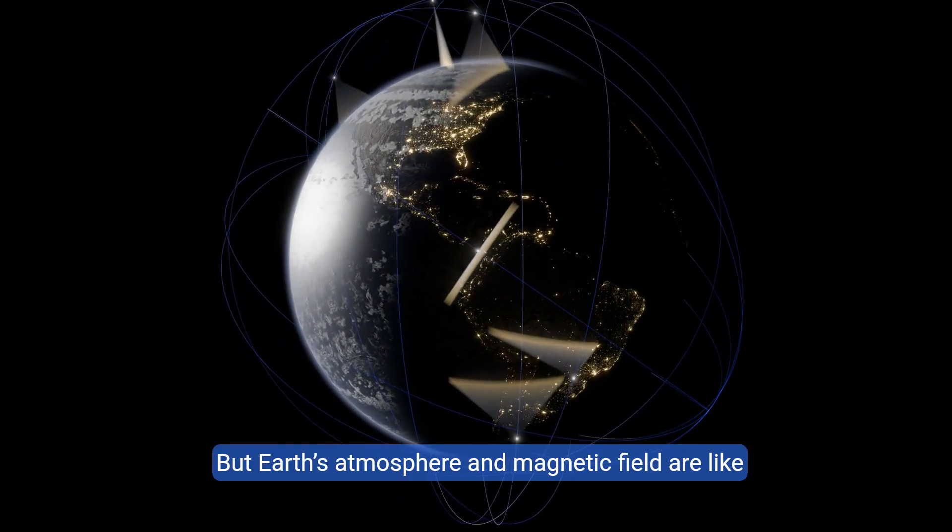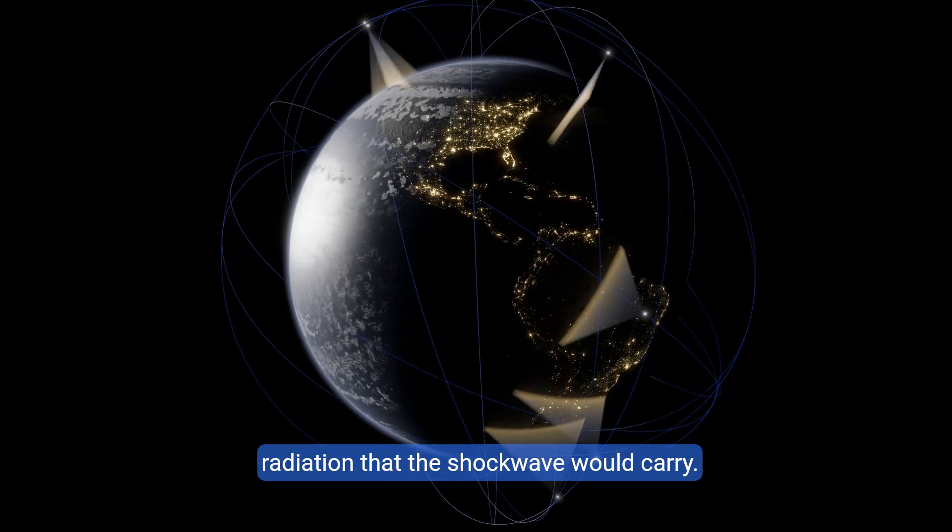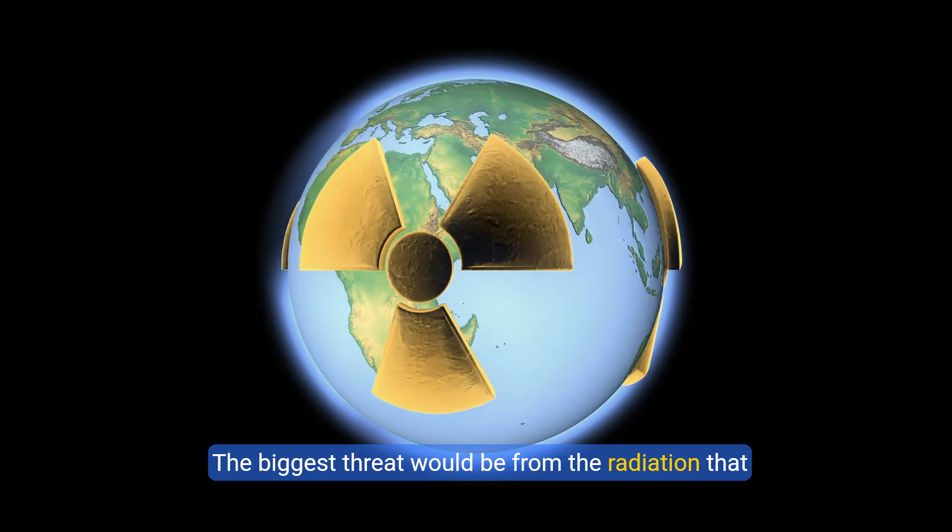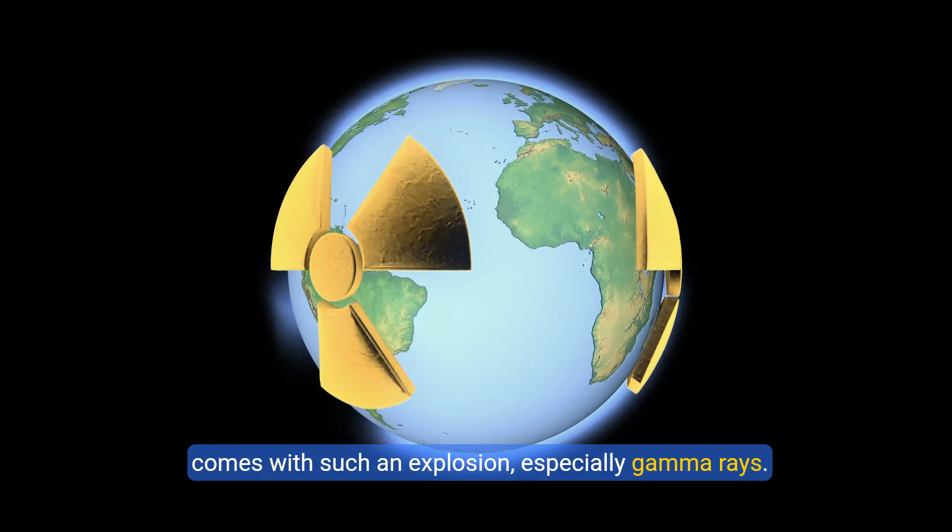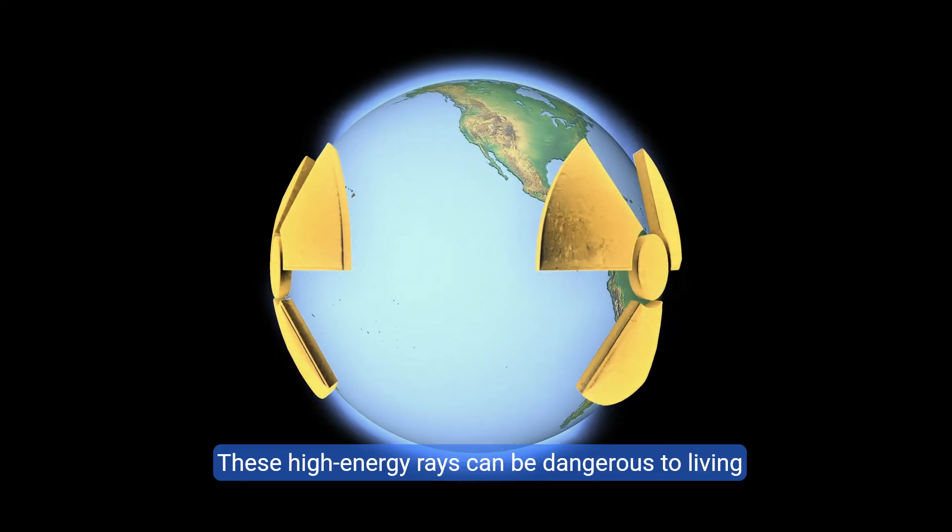But Earth's atmosphere and magnetic field are like shields, protecting us from most of the harmful radiation that the shockwave would carry. The biggest threat would be from the radiation that comes with such an explosion, especially gamma rays. These high-energy rays can be dangerous to living things.